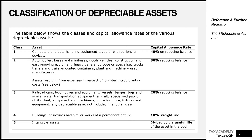Class four contains buildings, structures and similar works of a permanent nature, at 10% on a straight-line basis. Note that we stop using reducing balance at class four. Class five covers intangible assets — things you cannot see or touch, such as software, copyrights and patents. For class five, the cost is divided by the useful life, making it technically a variant of the straight-line method.